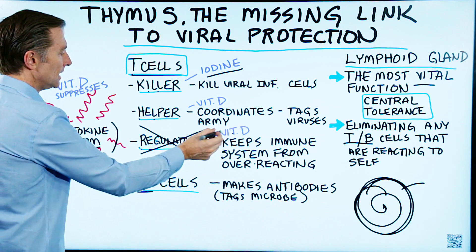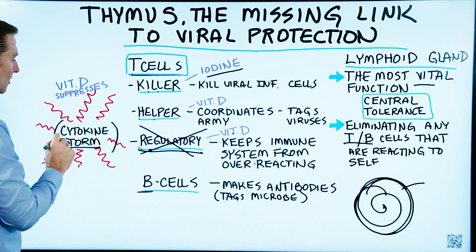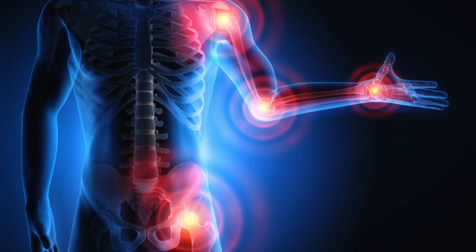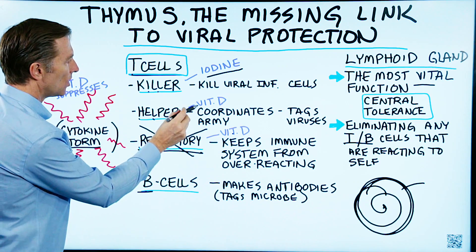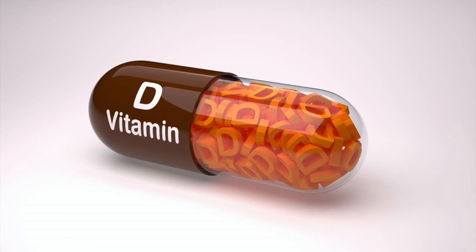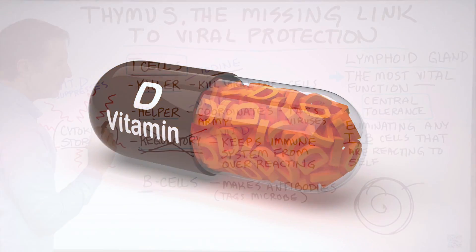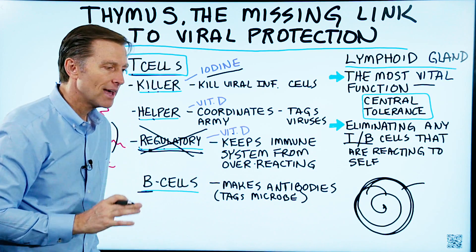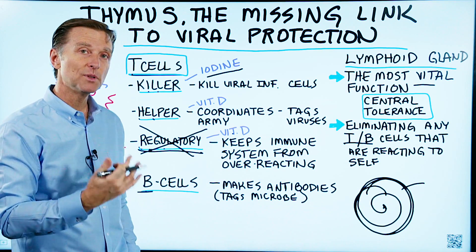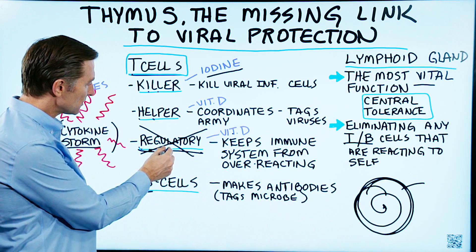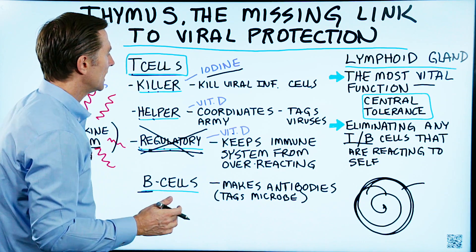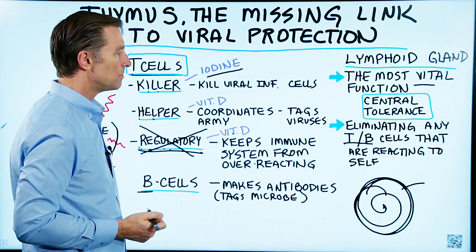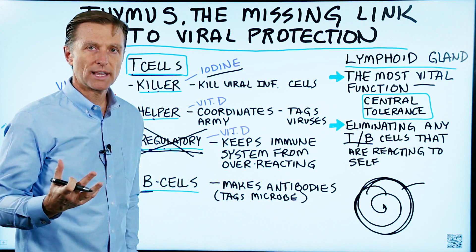It just so happens vitamin D can help regulatory T-cells and also help suppress inflammation. The helper T-cell also needs vitamin D to help coordinate the army. So you can see all of these cells work together. The regulatory T-cell also has a job of preventing autoantibodies and autoimmune conditions — when you lose this function, you get autoimmune issues, allergies, and all sorts of inflammatory conditions. Vitamin D is one of the best anti-inflammatories — it's an immune modulator that suppresses an overreaction of the immune system.